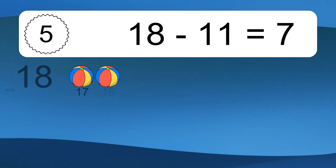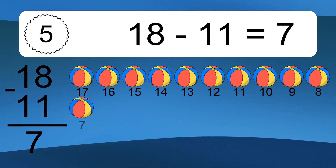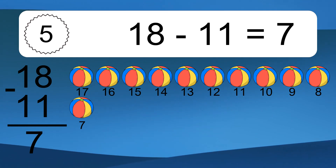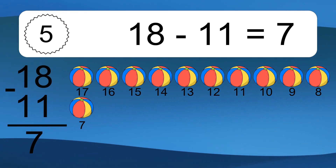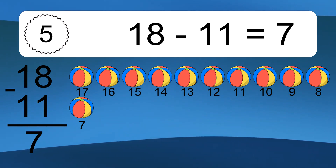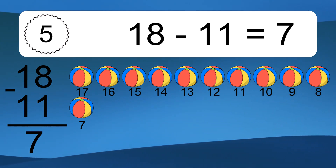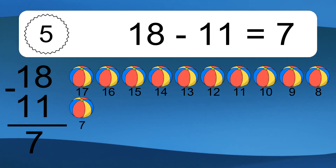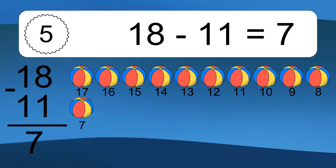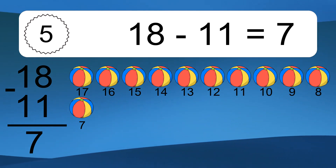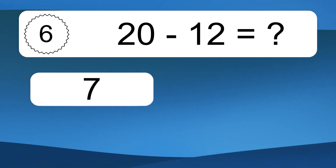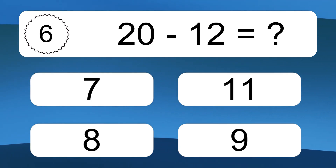18 minus 11 equals what? 18 minus 11 equals 7. Let's count it. 17, 16, 15, 14, 13, 12, 11, 10, 9, 8, 7.